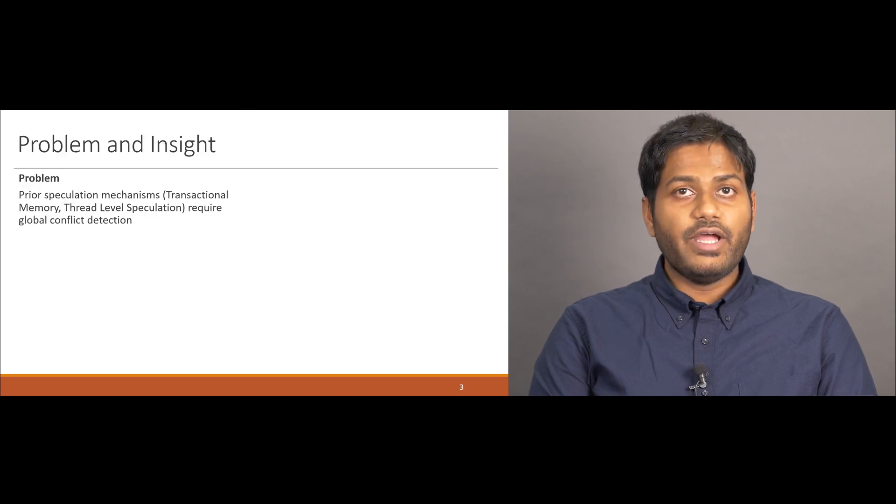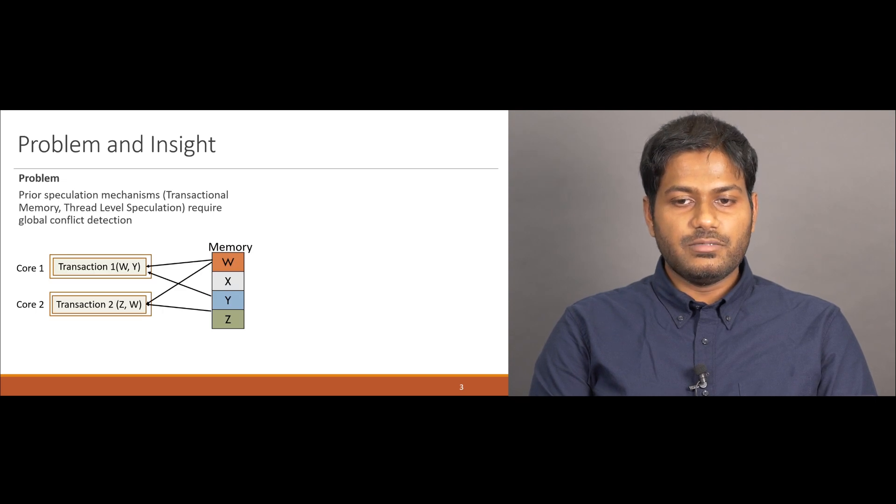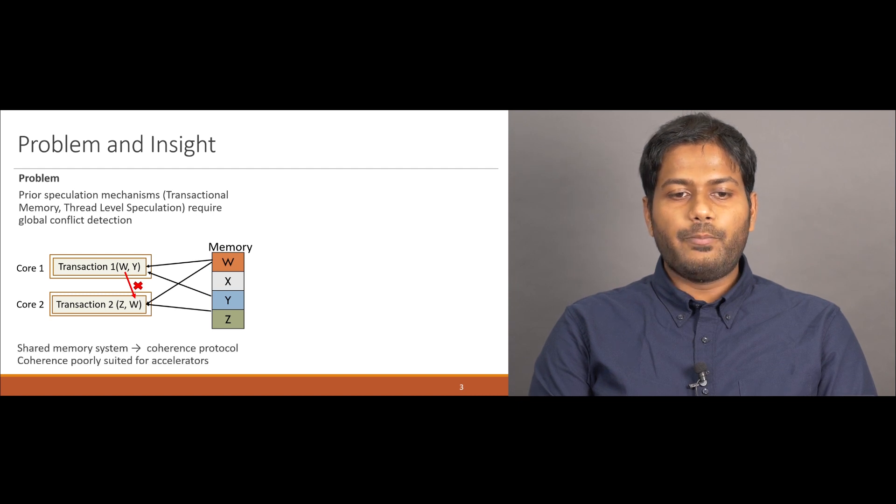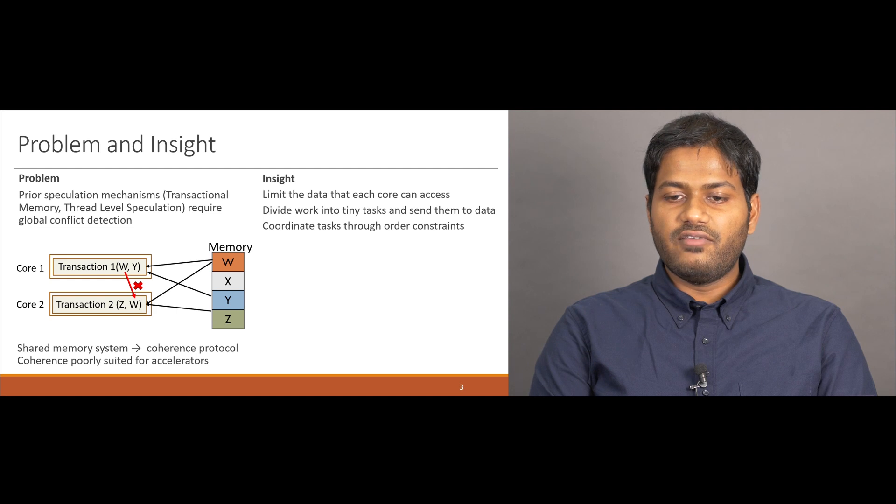In order to build Kronos, we had to overcome one significant challenge. Prior speculation mechanisms, such as transactional memory, require a global conflict detection mechanism. This is because these systems allow any transaction to run on any core and access any region of memory. Upon a conflict, the entire system needs to be checked for conflicting tasks. In prior shared memory systems, such global conflict detection is implemented by extending the cache coherence protocol. However, accelerators usually do not have coherence protocols and implementing one would add overheads. Hence, we rely on a different conflict detection mechanism.